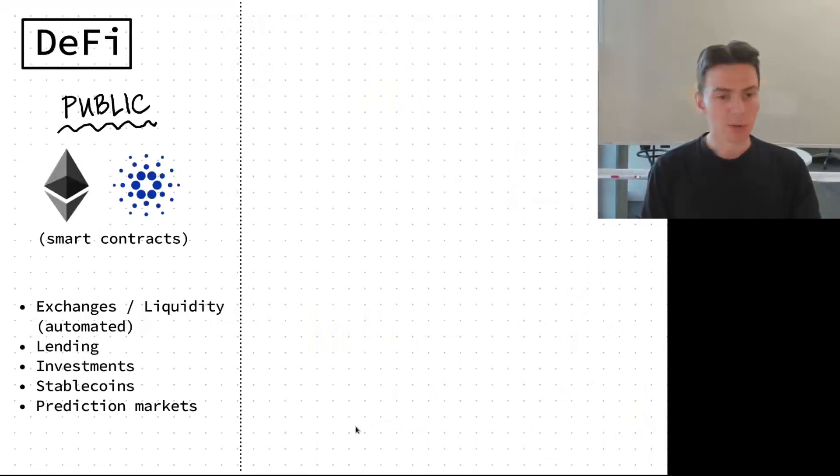This difference is very visible if we're trying to build centralized finance solutions in the public world where we have smart contracts. For example take Ethereum or Cardano, on these platforms you can build lots of different tools like automatic market makers, exchanges, lending platforms, investments, stable coins, etc.